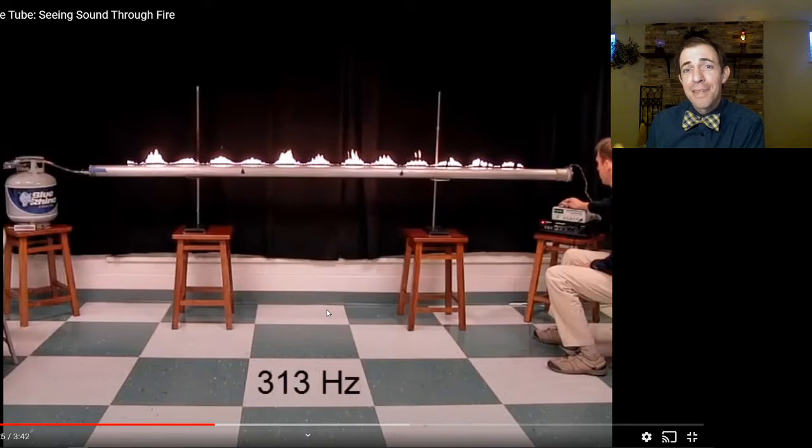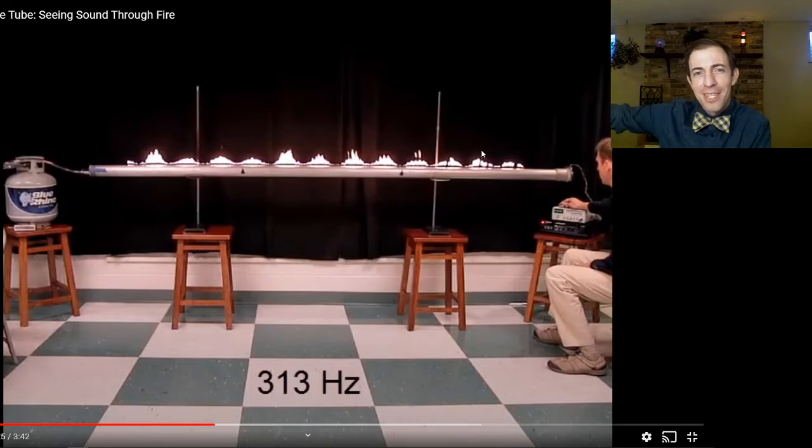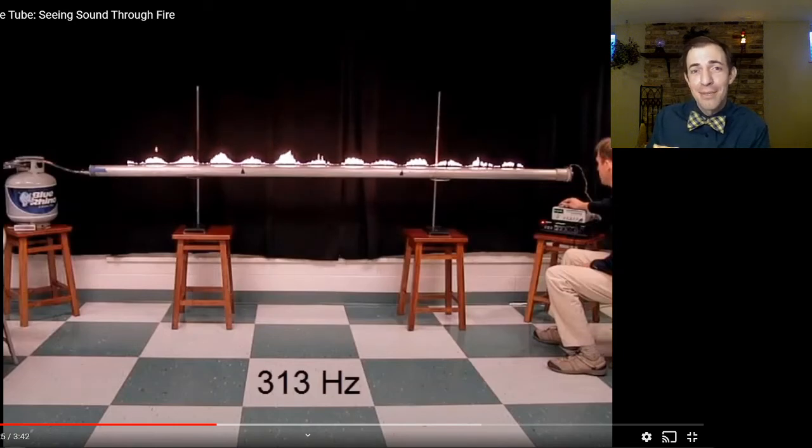This video here is showing something called a Rubens tube. A Rubens tube is basically a metal tube with a bunch of tiny holes pricked in the top that you pump full of a flammable gas like propane. And it basically works as like hundreds of tiny Bunsen burners. Flame is going to extend further out of the tube in areas of high air pressure. Now high air pressure is the anti-node of the wave. So if you produce a sound signal down one end of the pipe, you will see a standing wave forming where the anti-node, the high pressure, is always in the same spot.